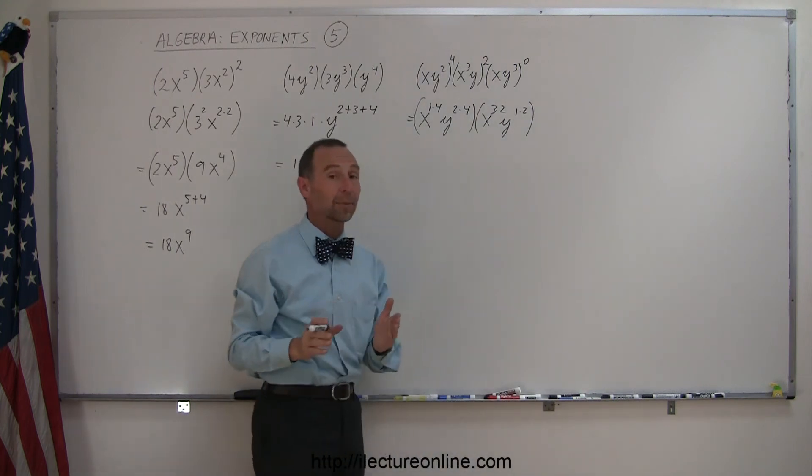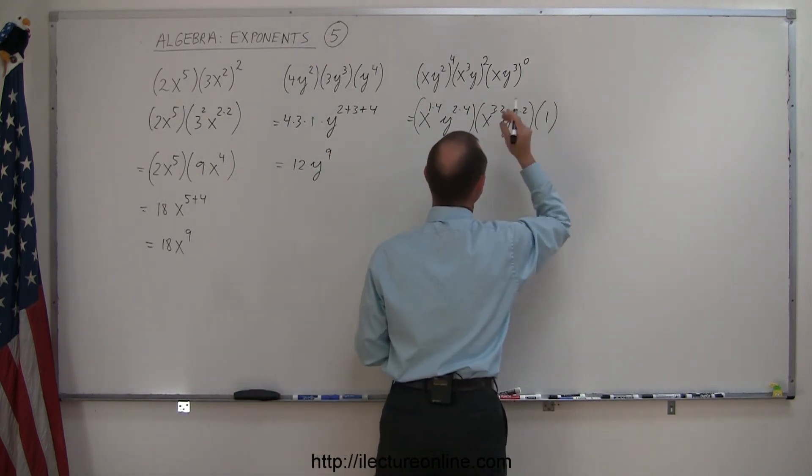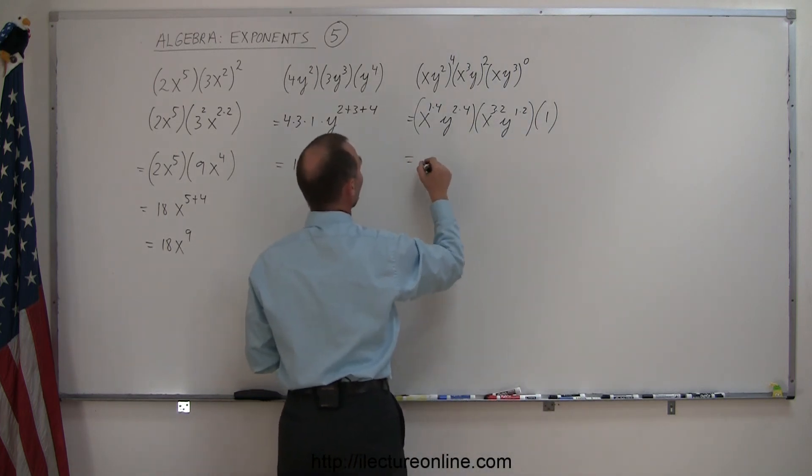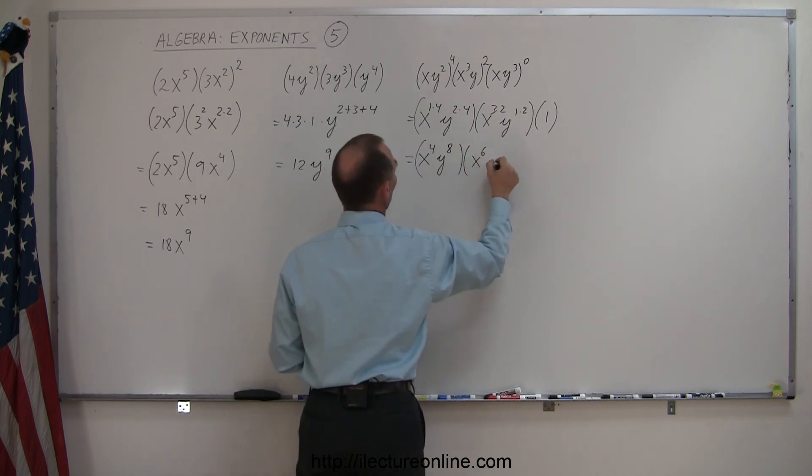And finally, look at this last one. This is raised to the 0 power. Remember, anything raised to the 0 power is equal to 1, so that's simply times 1. And then go ahead and simplifying this. We have x to the 4th, y to the 8, multiplied times x to the 6th, y to the 2nd.